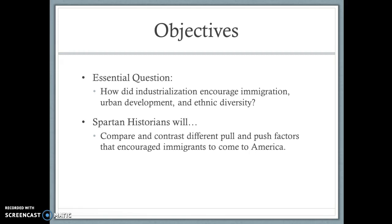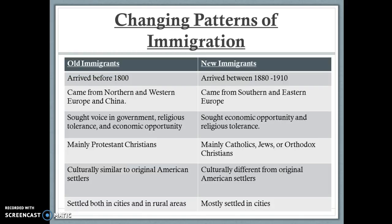There are two types of immigrants: old and new. Old immigrants were the first settlers, arriving before 1800 — think colonists — mainly from Northern and Western Europe, but also China. Northern and Western Europeans were primarily British, French, and Dutch. They came wanting a voice in government; the Puritans sought religious tolerance and economic opportunity through joint stock companies. Most were Protestants, very culturally similar to original American settlers, and they settled both in eastern seaboard cities and in rural areas farther west.